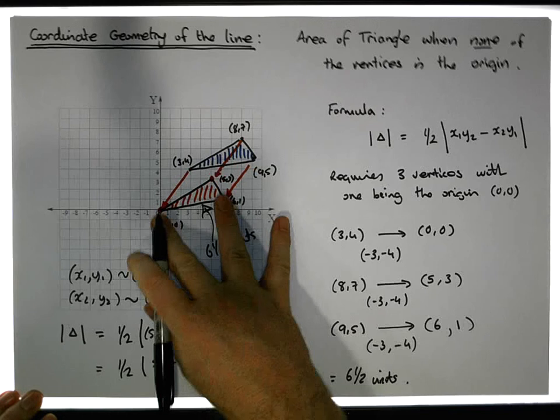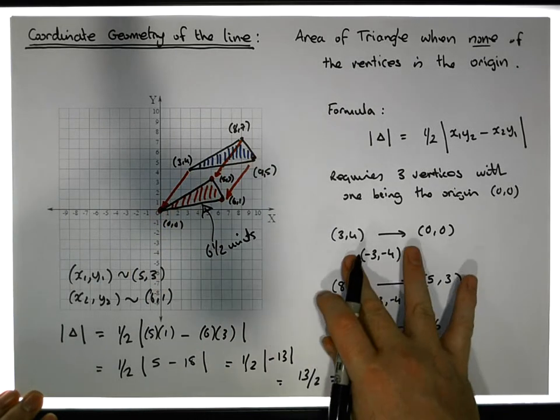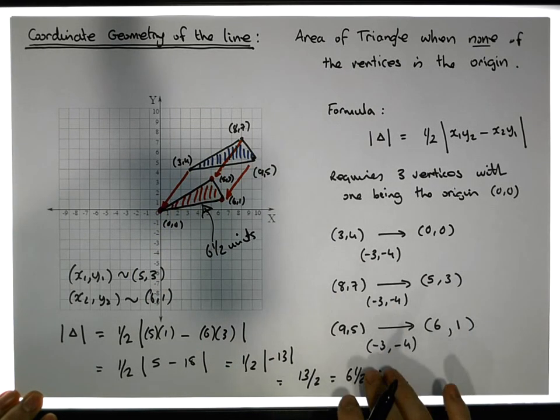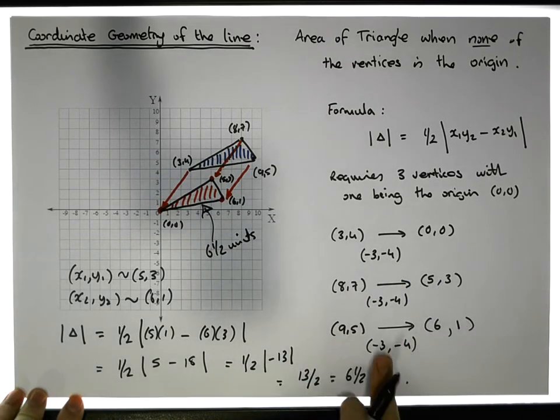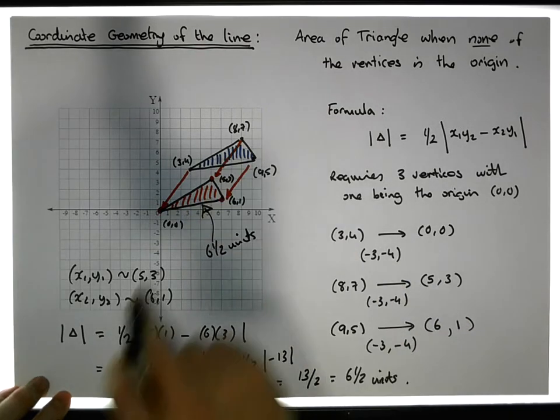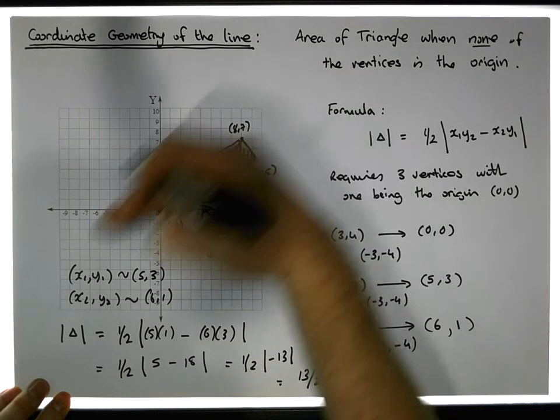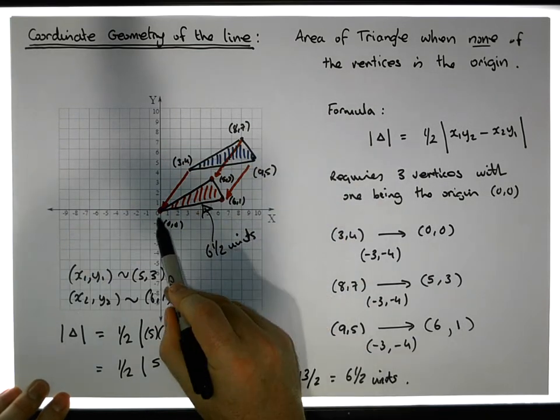But under the translation, this is congruent to this particular triangle here. Everything was moved based off the same amount. Every vertex was moved the same amount in the x direction and the same amount in the y direction. So these two things here are congruent. It's just a shifting of this particular triangle.